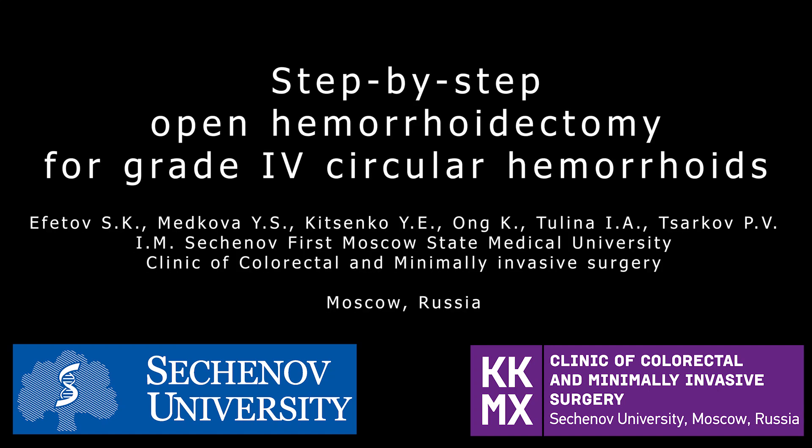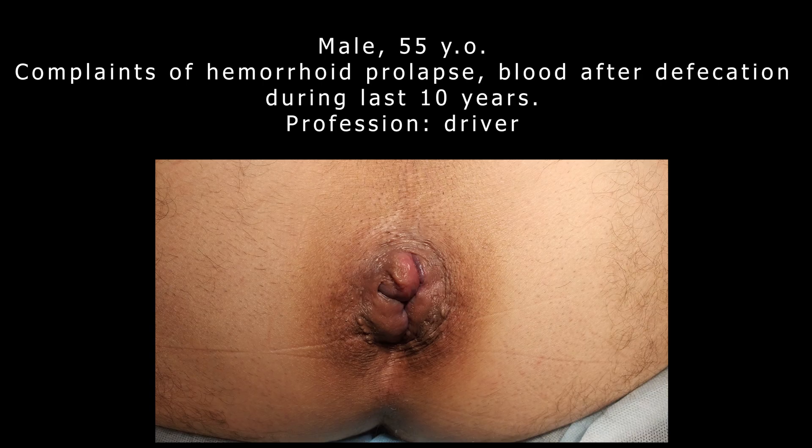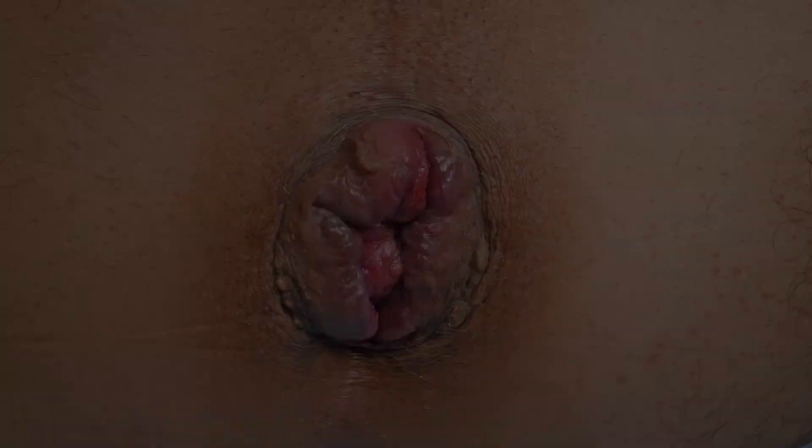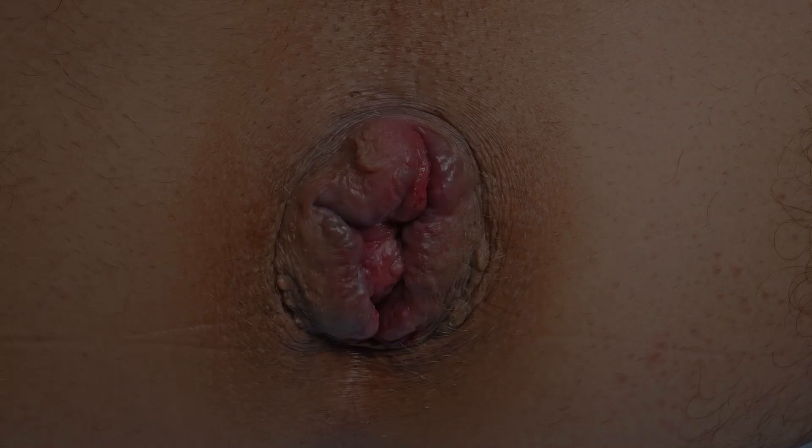Step-by-step open haemorrhoidectomy for grade 4 circular haemorrhoids. A 55-year-old patient is placed in a lithotomy position with circular stage 4 haemorrhoids, with prominent cushions located at typical sites: left lateral, right anterior, and right posterior.